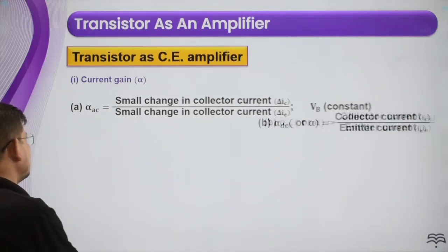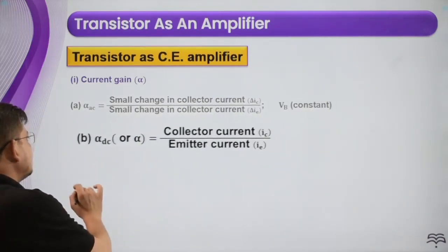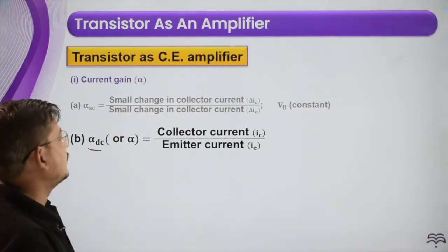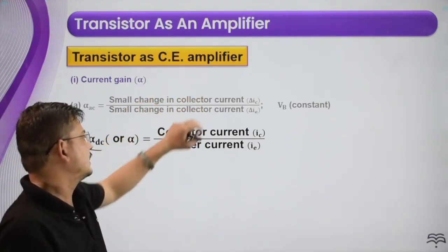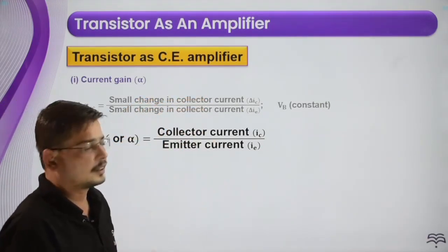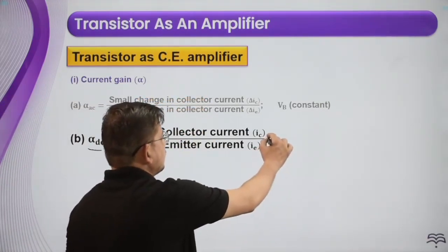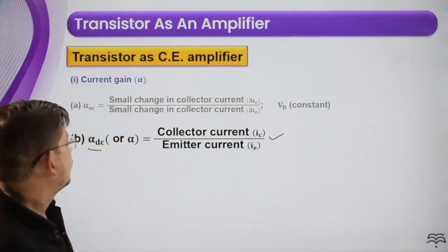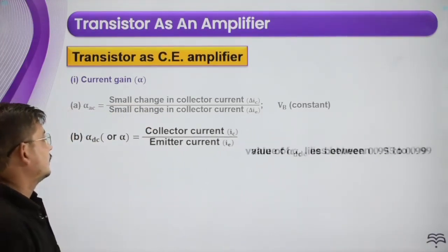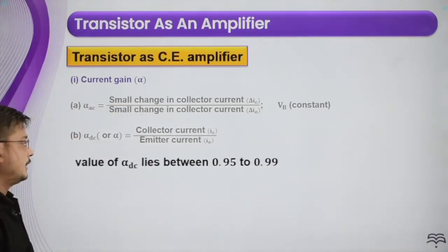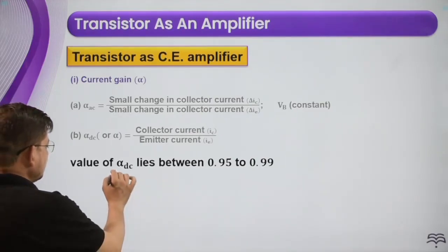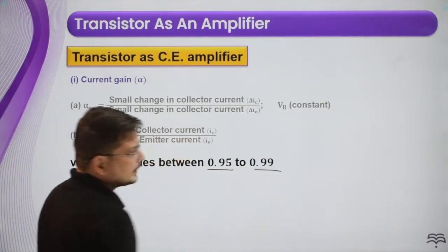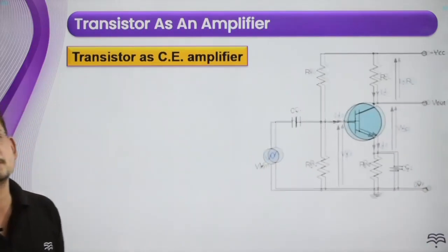The DC current gain can be given as the collector current divided by the emitter current. The ratio of collector current to emitter current gives the DC current gain. The DC value of alpha lies between 0.95 to 0.99.